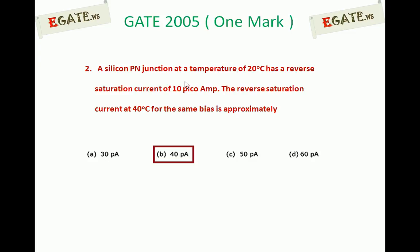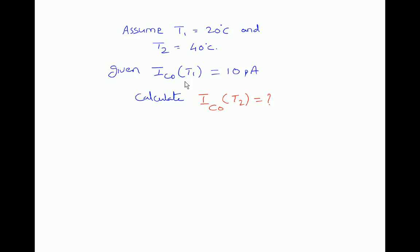When minority carriers increase, the current due to minority carriers increases, so the reverse saturation current increases. Reverse saturation current is a function of temperature. Now coming to the question: assume T1 is 20 degrees centigrade and T2 is 40 degrees centigrade, and the reverse saturation current at T1 is given as 10 pico amperes, i.e. IC0(T1) = 10 pico amperes. We need to calculate the reverse saturation current at T2, i.e. at 40 degrees centigrade.